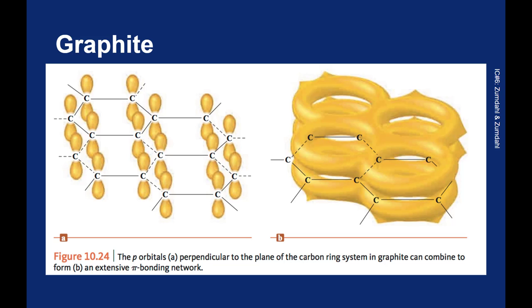These p orbitals from one sheet of graphene can overlap with p orbitals from the other sheets of graphene to make pi bonding. And that's what holds the sheets together.